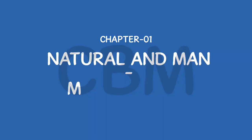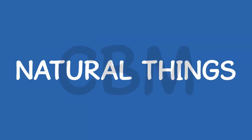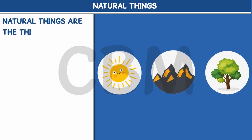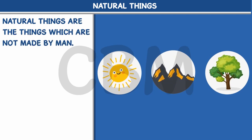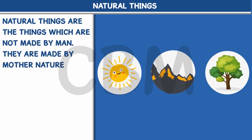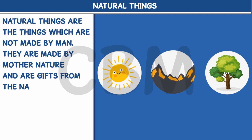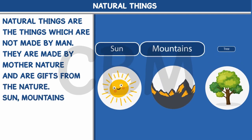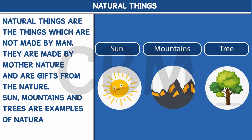Chapter 1: Natural and Man-Made Things. Natural things are the things which are not made by man. They are made by Mother Nature and are gifts from nature. Sun, mountains, and trees are examples of natural things.